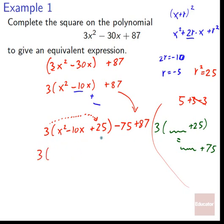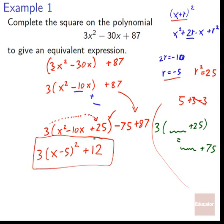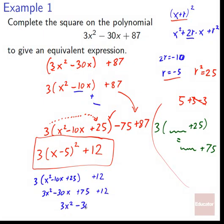So 3(x² − 10x + 25) with r = −5 collapses to 3(x − 5)². Let's check: x·x = x², x·(−5) + (−5)·x = −10x, (−5)·(−5) = 25. Checks out. Then −75 + 87 = +12. So the equivalent expression is 3(x − 5)² + 12. Verifying: 3(x² − 10x + 25) + 12 = 3x² − 30x + 75 + 12 = 3x² − 30x + 87. Great, checks out — that's the same thing as what we started with.